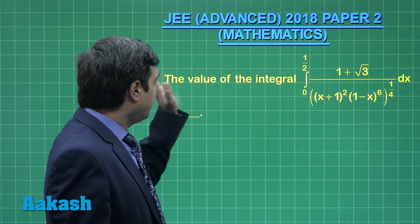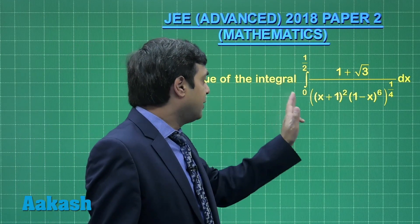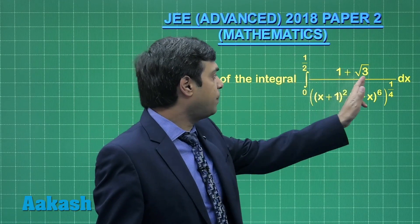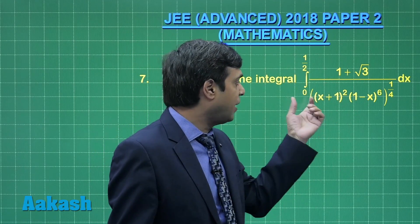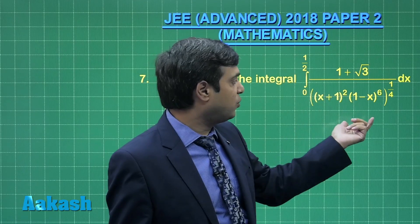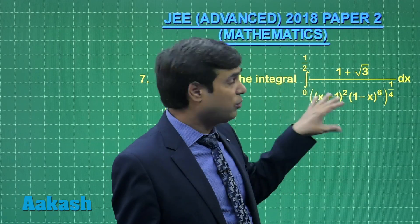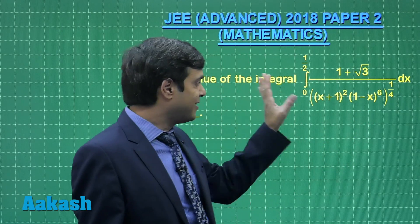Taking up question number 7: the value of the integral from 0 to 1/2 of 1 plus root 3 divided by (x plus 1) whole square into (1 minus x) whole 6, whole to the power 1 by 4, dx.